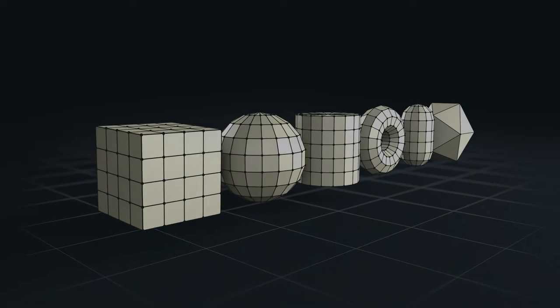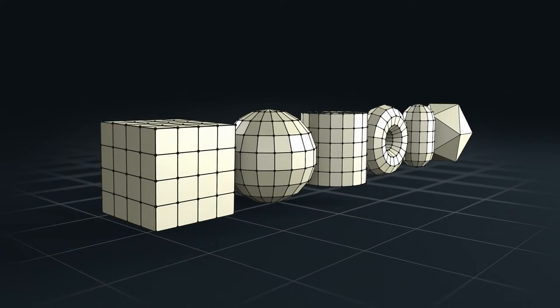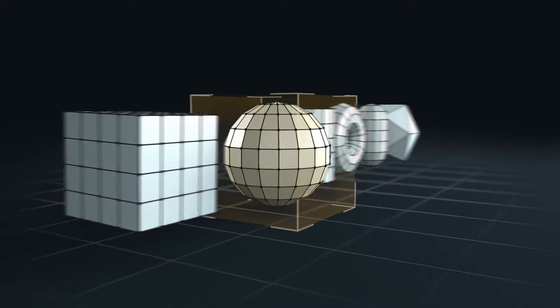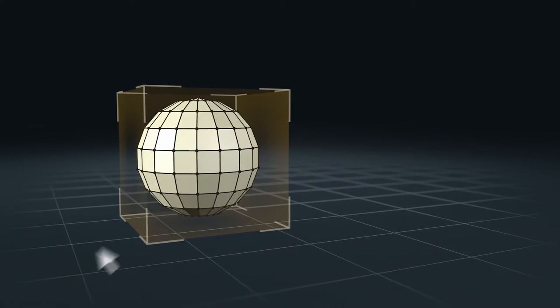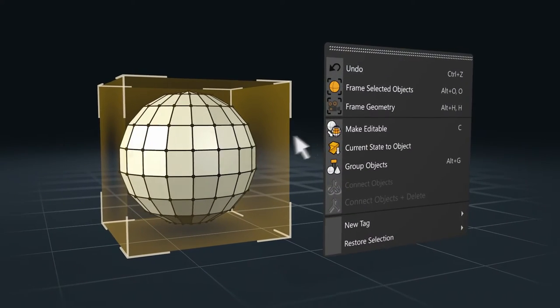Primitives are also not editable, which means we can only modify them through their attributes. If we want to change their points, edges or faces individually, we first need to convert them into editable objects.